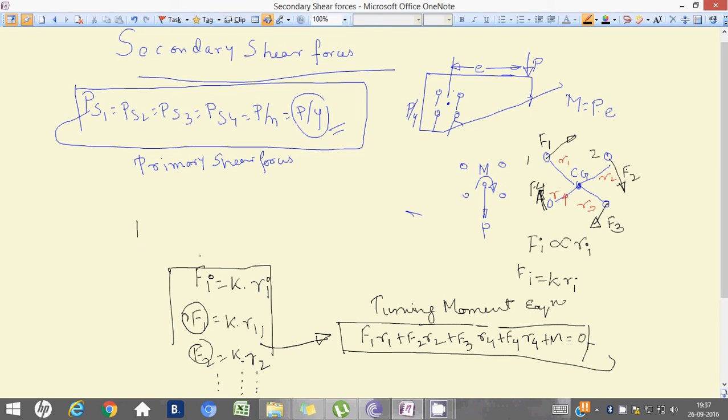It will be K R1 square, R2 square, R3 square, R4 square, plus equal to M. From this equation, we can find the value of K, that is M by summation of Ri square. We are generalizing this R1, R2, R3, R4 as Ri, where Ri square, since all are in square terms. Since we have 4 rivets, I equal to 1, 2, 3, 4. So, I found the value of K.